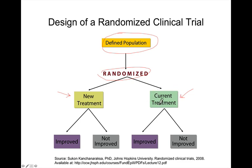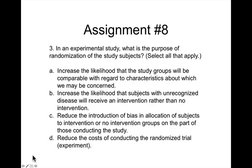There is a group that receives the current treatment or sometimes a placebo — something that essentially has no biological effect — so there is no way to tell the difference between those receiving the new treatment and those receiving a current treatment or placebo. Regarding our homework question three, which asked about the purpose of randomization in experimental studies: the primary reason is to reduce the introduction of bias into the allocation of subjects to intervention or no-intervention groups on the part of those conducting the study.